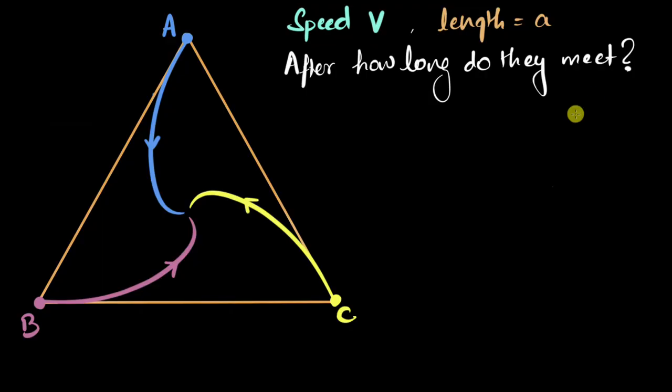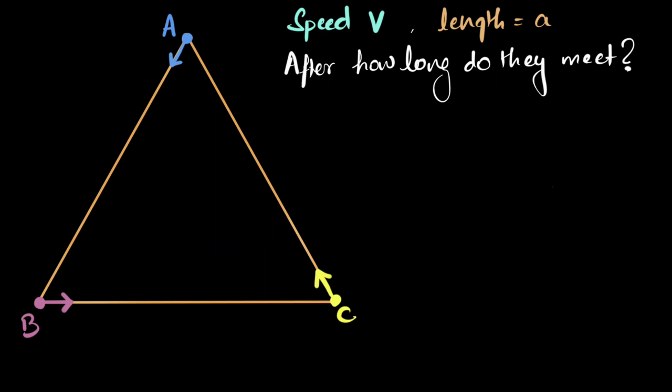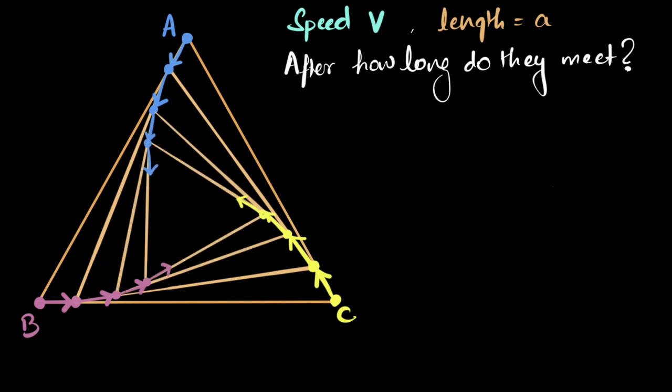So our original problem asks us how long it takes for them to meet, right? But if we go back to the kind of pictures that we drew, we can see something else. We can see that this original triangle that we began with, that triangle starts becoming smaller and smaller. Let me show you. So you have this big triangle with length A to begin with. A little later in time, look, the triangle becomes smaller, becomes smaller, becomes smaller, and smaller, and smaller. So what do you think is going to happen when they all meet? That triangle is going to vanish. That triangle's size is going to be zero. The length is going to be zero. Which means we can, another way to look at this question is we can ask, hey, how long does it take for the length of this triangle to go to zero?